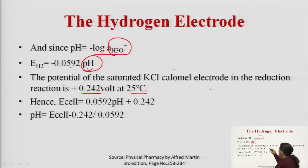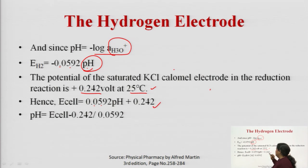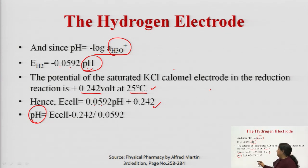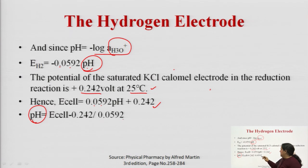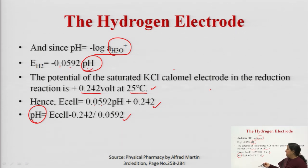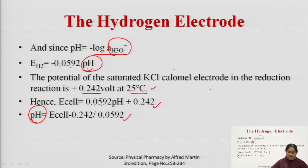Since we know the potential of the reference electrode (0.242 V), we can write: E_cell = 0.0592 × pH + 0.242. Therefore, pH = (E_cell − 0.242) / 0.0592. We put the test solution in contact with the indicator electrode; knowing the potential of the reference electrode, we can calculate the potential of the indicator electrode and thus the pH of the test solution.